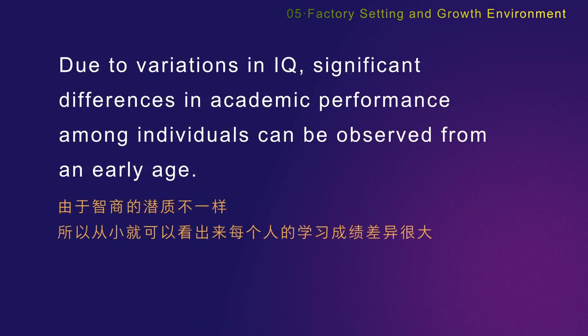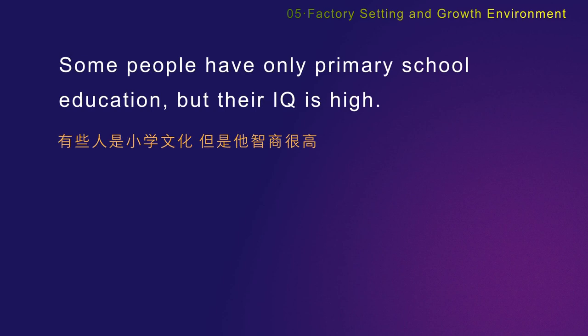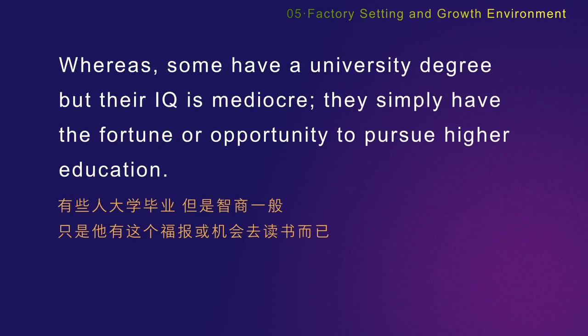Due to variations in IQ, significant differences in academic performance among individuals can be observed from an early age. Of course, IQ and education level are not directly proportional. Some people have only primary school education, but their IQ is high, whereas some have a university degree but their IQ is mediocre — they simply have the fortune or opportunity to pursue higher education.